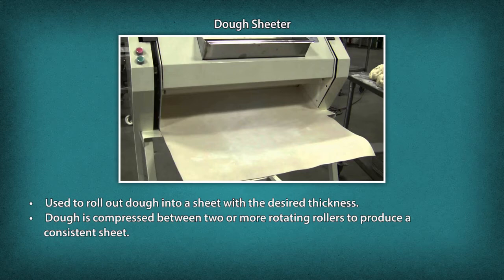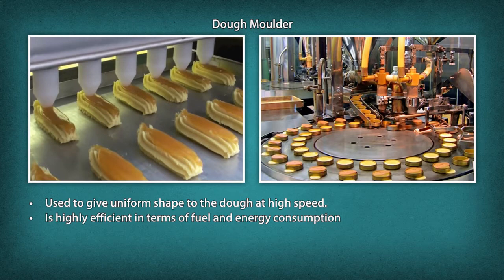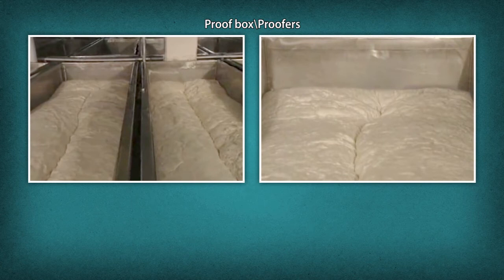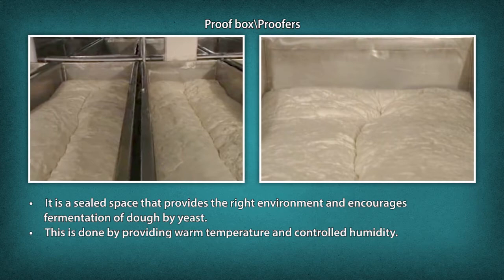Dough Molder: It is used to give uniform shape to the dough at high speed. It is highly efficient in terms of fuel and energy consumption. Proof Box/Proofers: It is a sealed space that provides the right environment and encourages fermentation of dough by yeast. This is done by providing warm temperature and controlled humidity.